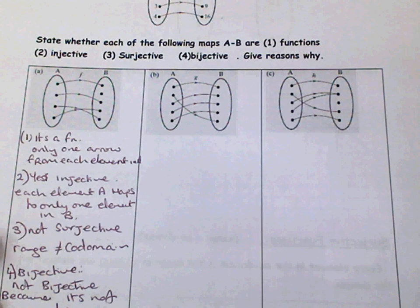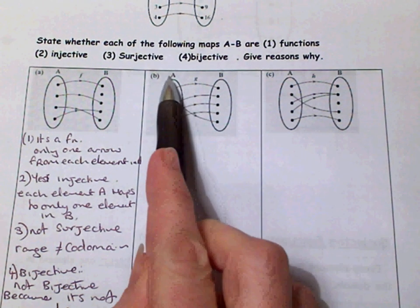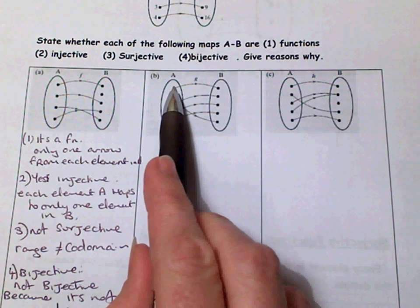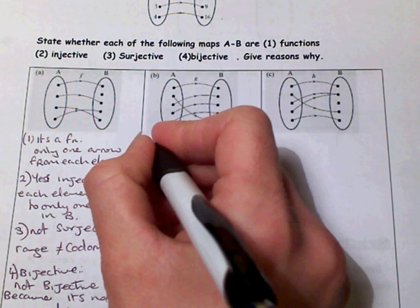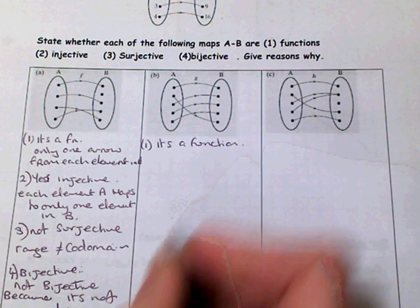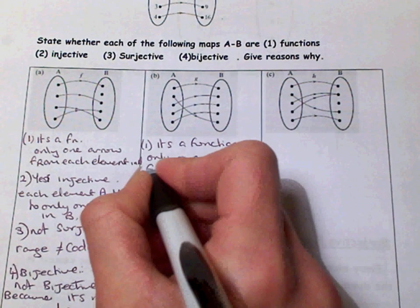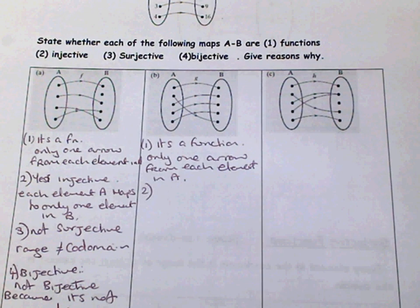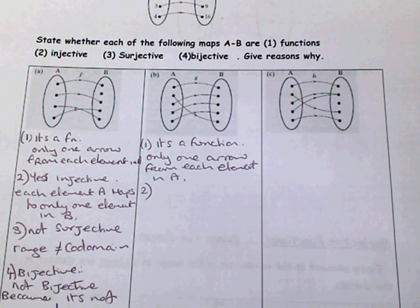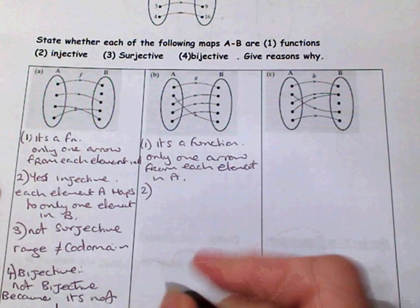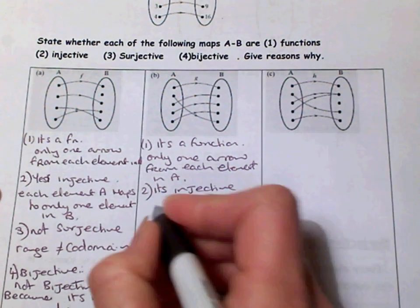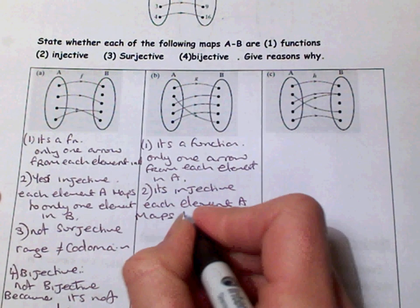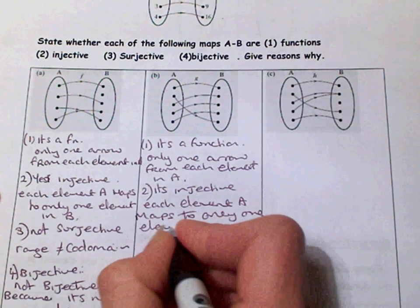Moving on to part B. You're given this function with the domain, range, and co-domain. First of all, is it a function? Yes, it is a function because each input only has one arrow going from it — only one arrow from each element in A. Two: is it injective? Does each input have a unique output? Yes, it does. So it's injective because each element in A maps to only one element in B — a unique output.